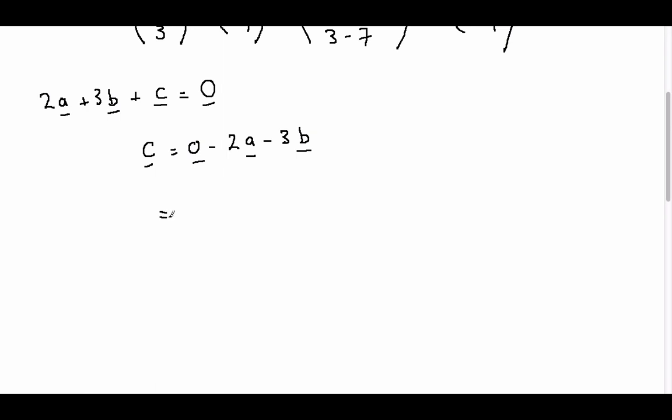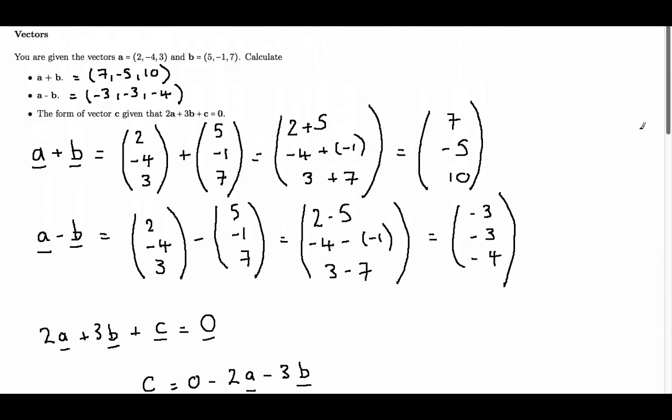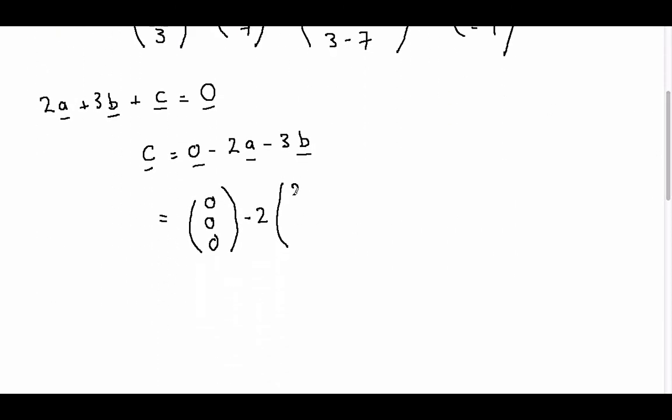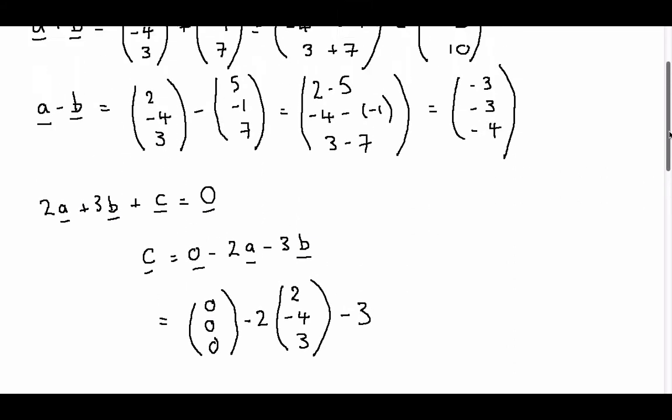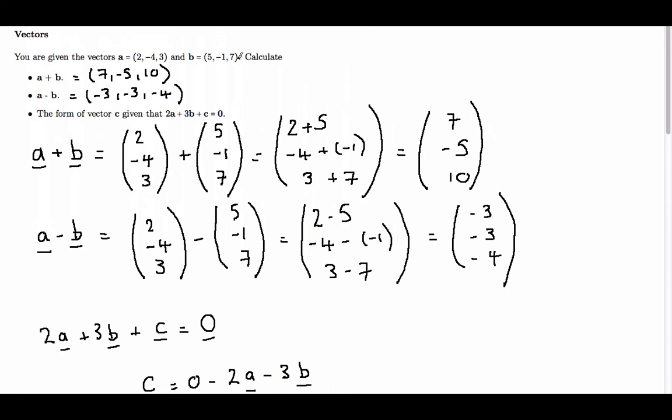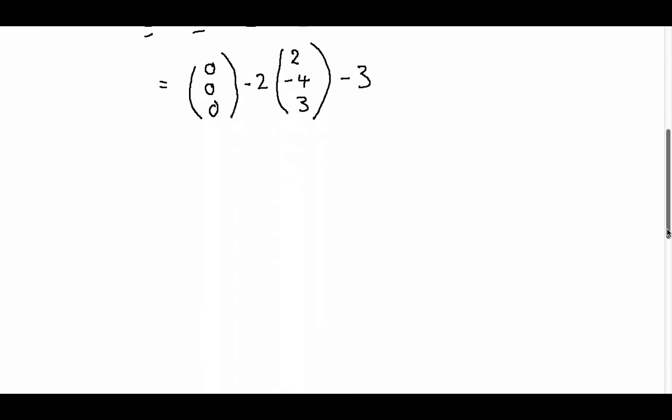So the zero vector is just 0, 0, 0 minus 2 lots of vector a. Now vector a is 2, minus 4, 3 minus 3 lots of vector b. And vector b is 5, minus 1, 7.